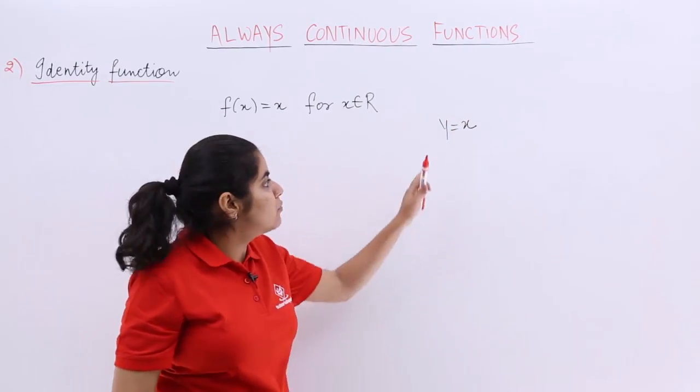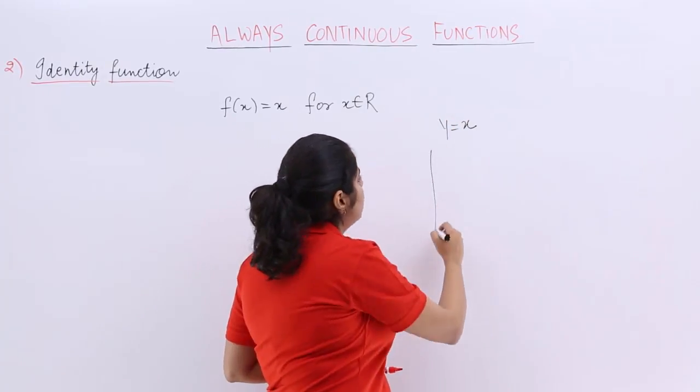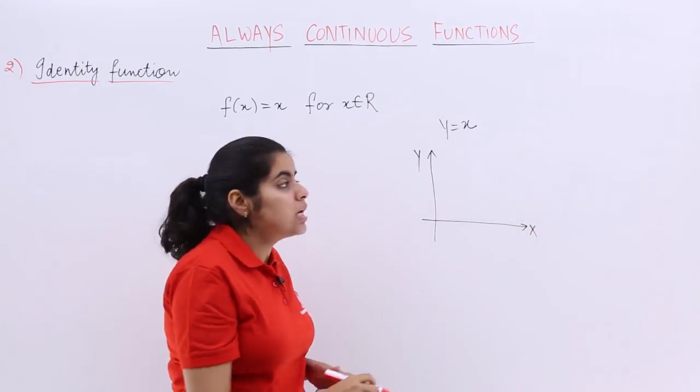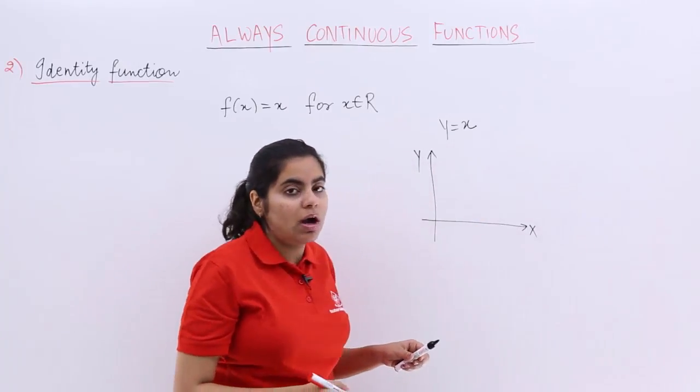If you want to plot the graph of y equals x, this is x axis, this is y axis. Now y equals x means what?